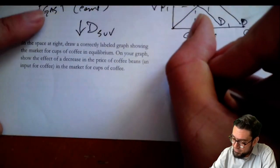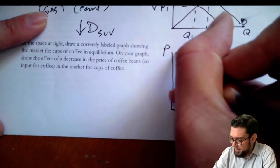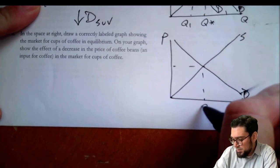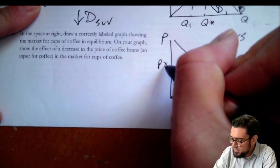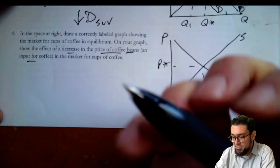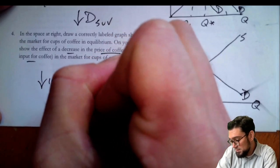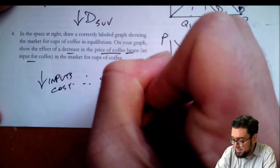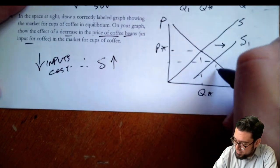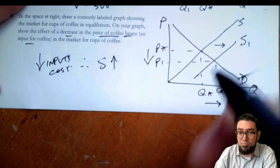Number four: draw a correctly labeled graph for the market of cups of coffee. Coffee, supply and demand — Q* and P*. Show the effect of a decrease in the price of coffee beans, which are an input. If input costs go down, supply is going to increase, so we shift supply to the right. It's cheaper to produce the coffee, so more coffee gets produced at a lower price.